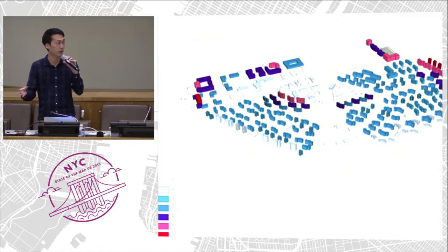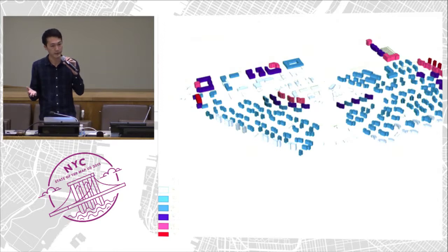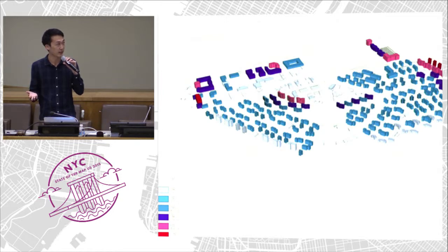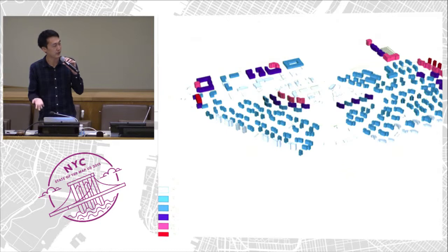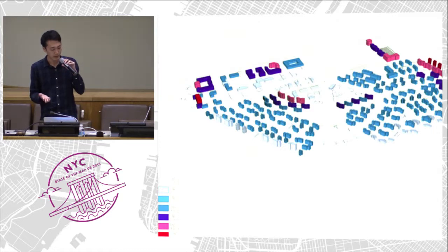When you have a contract with the client, they're obligated to give you the best geographical data available. But if you're a student or entering an architectural competition, you don't really have access to good data, especially in places like China and India where there's a lot of construction going on but not really free access to geographical data from local governments. So people in architecture and planning need to communicate visually, and this almost always requires geographical context. I'm going to explore how OSM can contribute to that.